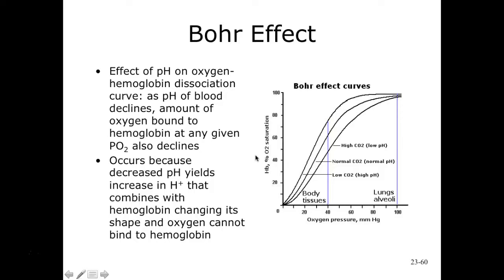The Bohr effect describes the effect of pH on our oxygen-hemoglobin dissociation curve. As blood pH declines — more acidic blood — the amount of oxygen bound to hemoglobin at any given partial pressure of oxygen also declines, shifting the curve to the right. This occurs because the decrease in pH yields an increase in hydrogen ions that combine with hemoglobin, changing its shape so oxygen cannot bind as readily. Conversely, low CO2 levels yielding high pH cause a shift to the left.